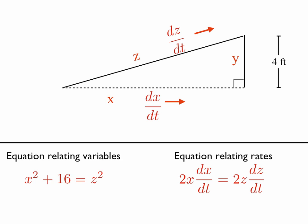So the equations that relate the variables, if we look at this, we have a right triangle. And so we know from the Pythagorean theorem that x² + 16 = z². And the equation that relates the rates, if we differentiate that x² + 16 = z² implicitly, remembering that the x is a function of t and the z is a function of t.